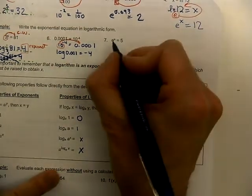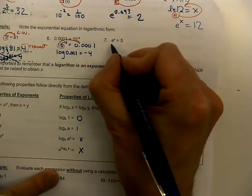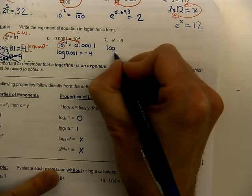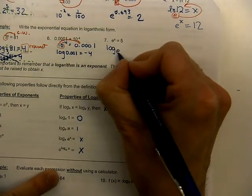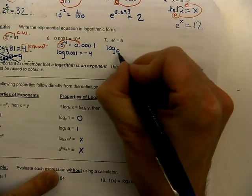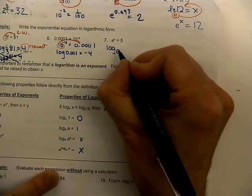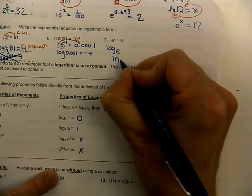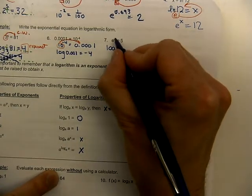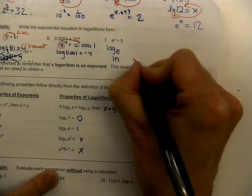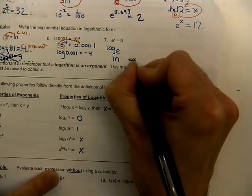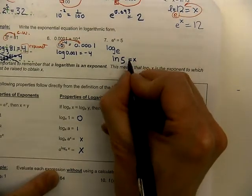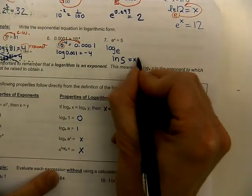We'll finish off with number seven. Here is my base of e. Normally we would start by saying here's the log and here's the base, but we don't want to write it that way. If you have the natural base of e, you want to replace all of that with ln. Then x equals 5 — fill that in backwards: x on the far right, equals sign to the left of that, and then 5 to the left of that. So natural log of 5 equals x. There's your exponent.